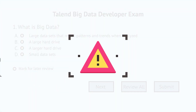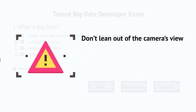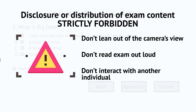You won't be aware of the proctor's presence. However, if the proctor suspects a security issue, or if there's a technical problem, you'll receive an on-screen warning — for example, if you lean out of the camera's view and the proctor can no longer see you clearly. Reading the exam out loud or interacting with another person during the exam is not permitted. Additionally, disclosure or distribution of any exam content is strictly forbidden.